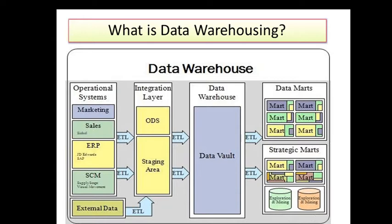At a high level, if you look at the diagram, on the left side we have the operational system we discussed earlier. It feeds information to the data warehouse. In between, you see arrows labeled ETL — Extraction, Transformation, and Loading — which is a process we will discuss in detail later. That process loads information from operational systems to the staging area and then to the data warehouse, after which we have data marts and strategic marts.